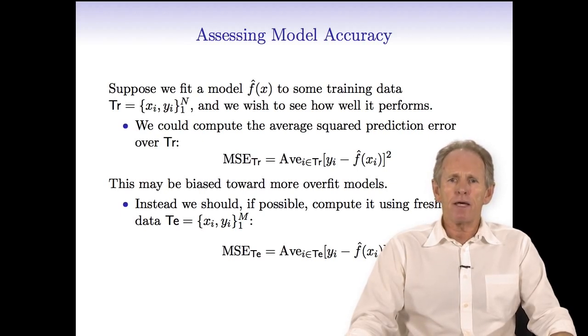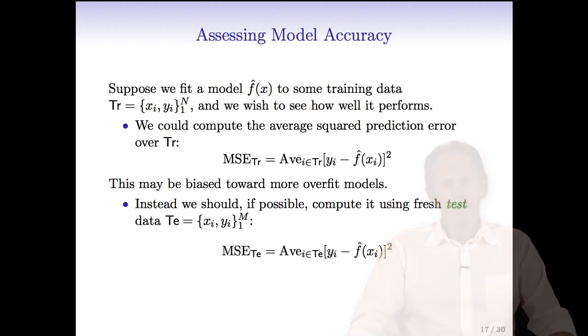Suppose we have a model f̂(x) that's been fit to some training data, and we'll denote the training data by Tr. That consists of n data pairs (xi, yi). Remember, the notation xi means the ith observation, and x may be a vector with a bunch of components. yi is typically a single scalar, and we want to see how well this model performs.